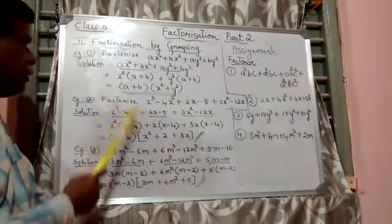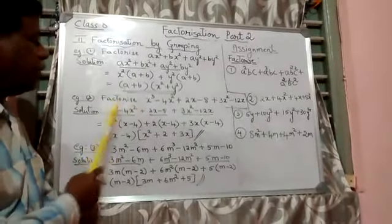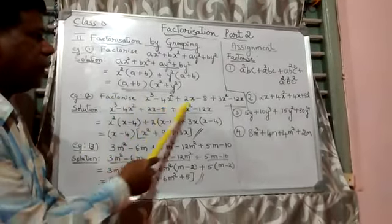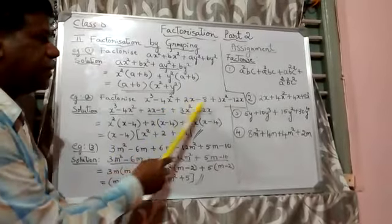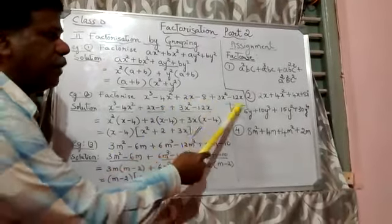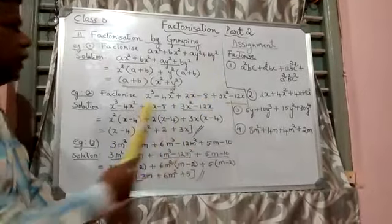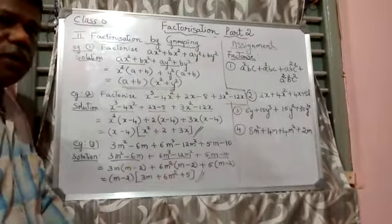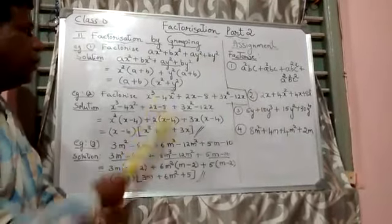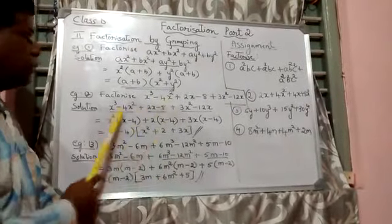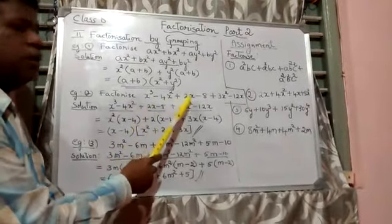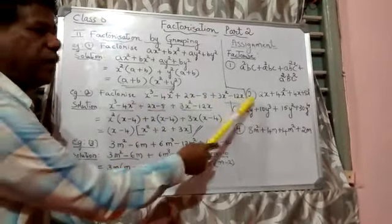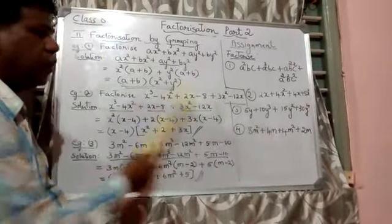The second example is: factorize x³ minus 4x² plus 2x minus 8 plus 3x² minus 12x — six terms. Nothing is common in all the six terms, so group them: the first two terms as one group, the third and fourth terms as the second group, and the fifth and sixth terms as the third group.